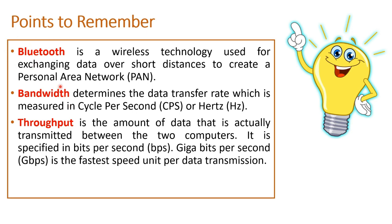Bluetooth is a wireless technology used for exchanging data over short distances to create a personal area network. A personal area network is a small network — if you turn on Bluetooth and share data or internet with your friend, a small personal area network is formed between the two devices. This technology is called Bluetooth technology.